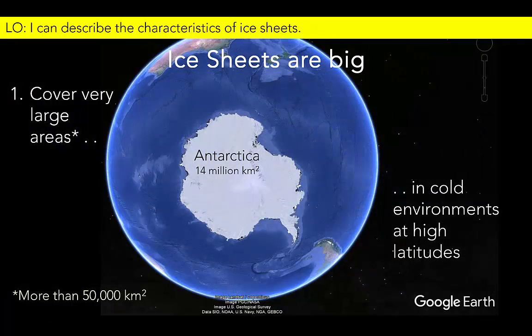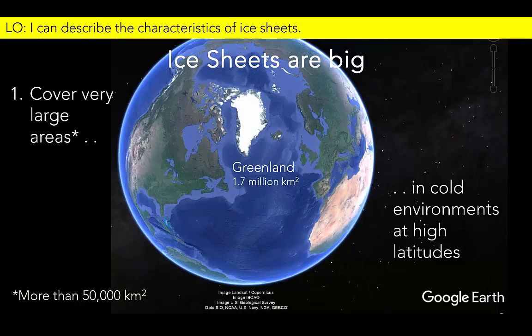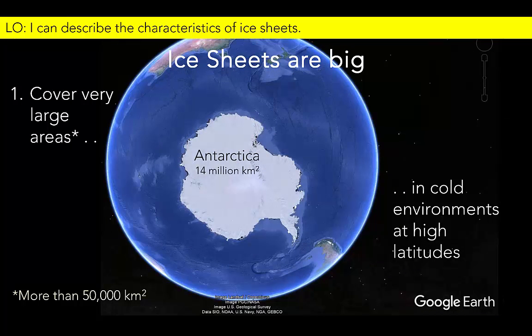Let's begin with a closer look at ice sheets. Ice sheets are huge, extending for millions of square kilometers. Such large volumes of ice and snow can only accumulate and remain where temperatures are very low. For example, Antarctica is the coldest place on Earth. Average annual temperatures in the high interior of the continent are about minus 57 degrees Celsius, and even areas along the coast rarely get above freezing during the year.